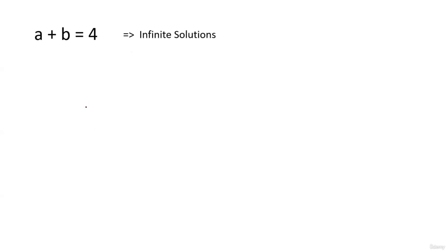Why? Because I have not specified the nature of a and b. You can take a as 2 and b as 2, you can take a as 4 and b as 0, you can take a as let's say 9 by 2.